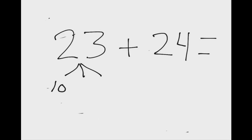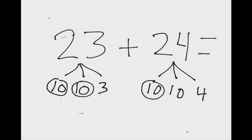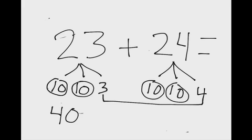23 is 10, 10, and 3. 24 is 10, 10, and 4. So then they can add their tens together. They could even count by tens. 10, 20, 30, 40, and then they can add their ones. And 3 and 4 is 7, so 40 plus 7.